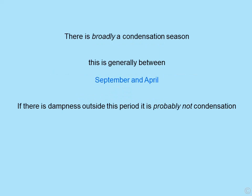There is broadly a condensation season, and this is generally between September and April. If there is dampness outside that period, it is probably not condensation — though it doesn't say it isn't, it's just less likely to be.